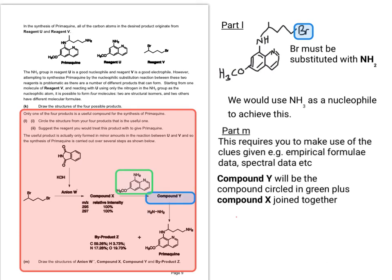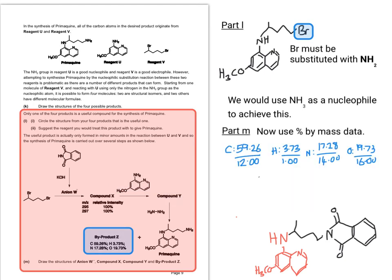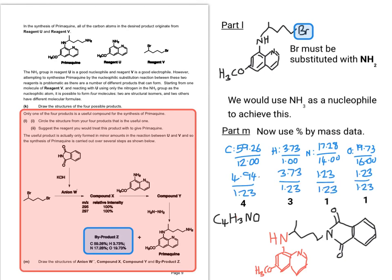To work out the structure of compound Y, it's quite straightforward: you take the compound circled in green and add it together with compound X that you've just worked out, giving you the structure for compound Y. Now using the percentage by mass data to work out the empirical formula of byproduct Z: dividing the percentage by the relative atomic mass first gives a rough ratio, then dividing through by the smallest gives 4, 3, 1, and 1 — which is C₄H₃NO.